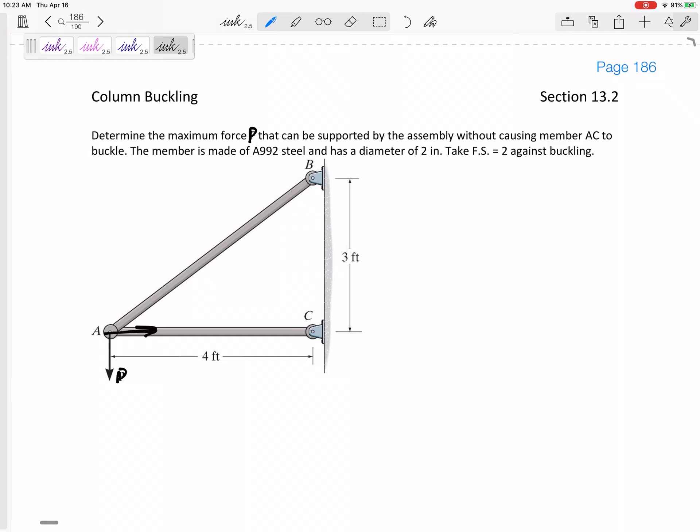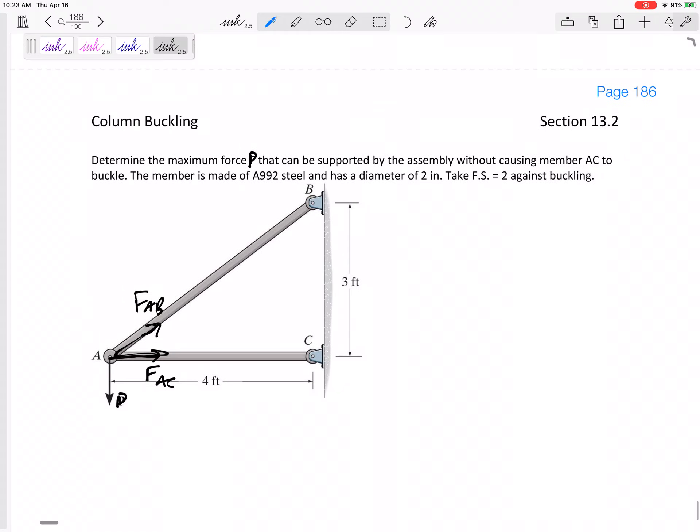It might buckle if this force, the force in AC, is too large. Do you see that these are all pin to pin, this is like a truss. We could look at the force in AC and the force in AB. So let me look at joint A. We got to go back to method of joints. I've got force P here, I've got force in AC, I've got force in AB.